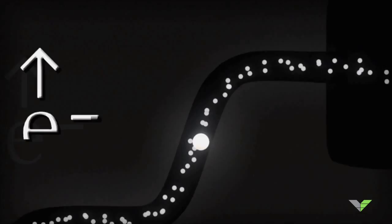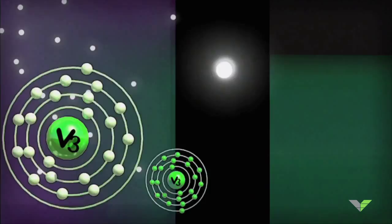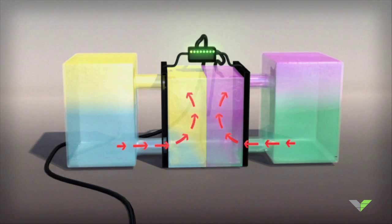They then enter the current collector of the negative half of the cell stack and jump onto the vanadium 3-plus ions in the uncharged negative electrolyte, converting it into a vanadium 2-plus solution. The addition or subtraction of electrons causes the solutions to change color.